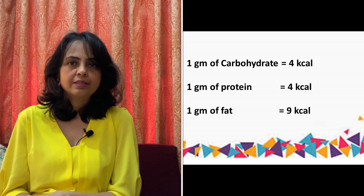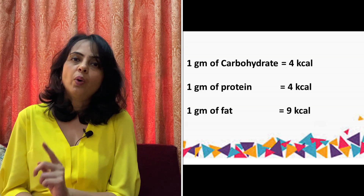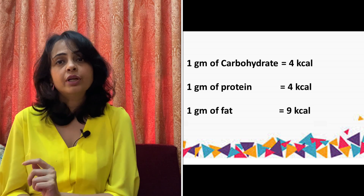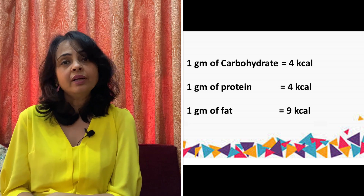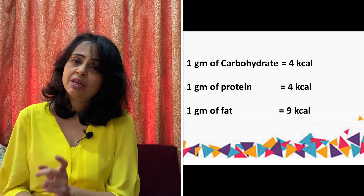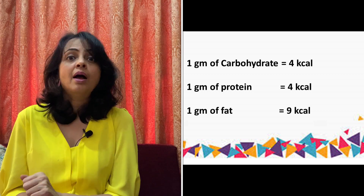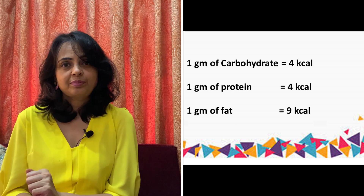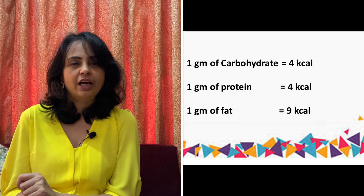Before we do our calculations, let's know certain key facts. One gram of carbohydrate gives you 4 kilocalories. One gram of protein also gives you 4 kilocalories. But one gram of fat gives you 9 kilocalories — which is more than double. Keeping these figures in mind, let's continue with our calculation.